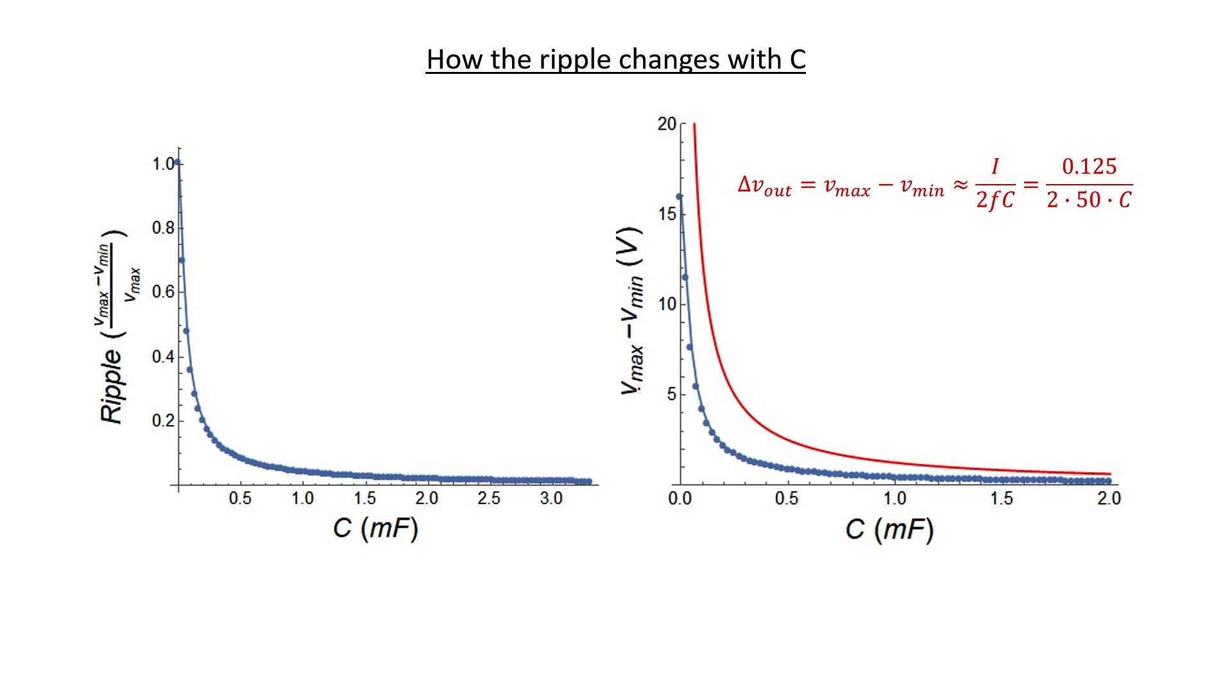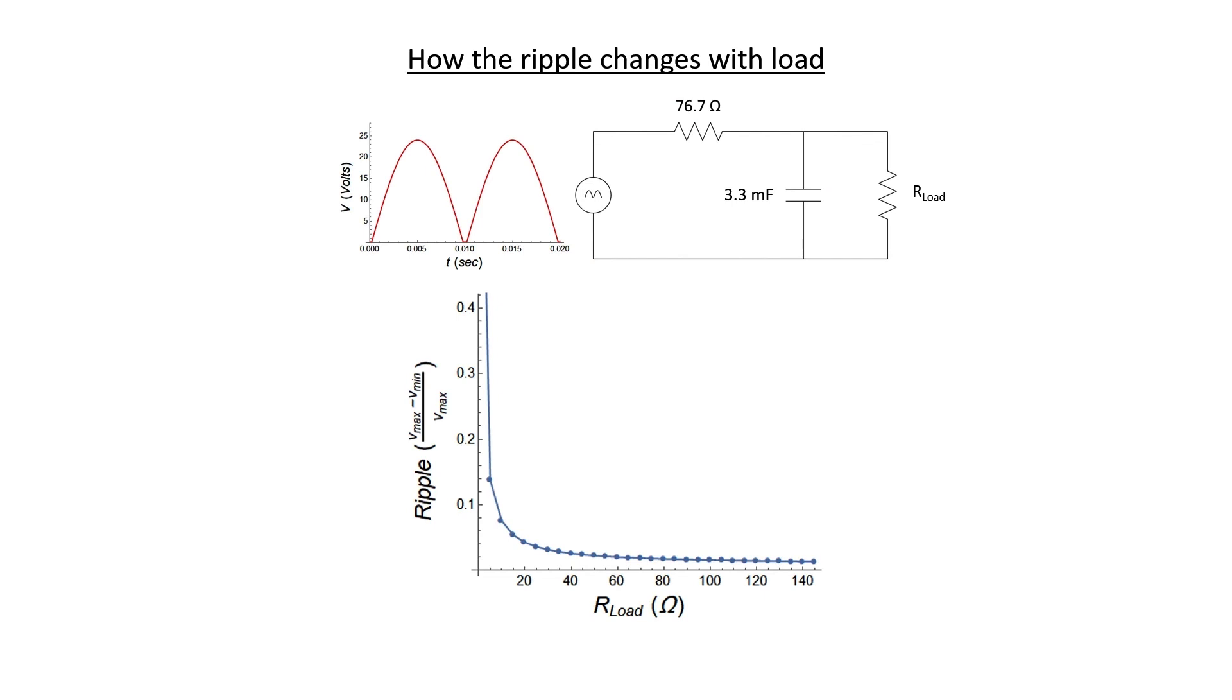The last thing that I'd like to take a look at here before wrapping up the video is to see how the ripple changes with the load. As you can imagine, if you use a very large load resistor, then it won't draw very much current from your circuit and a capacitor doesn't have very much trouble maintaining the low ripple voltage that you would like from any DC power supply.